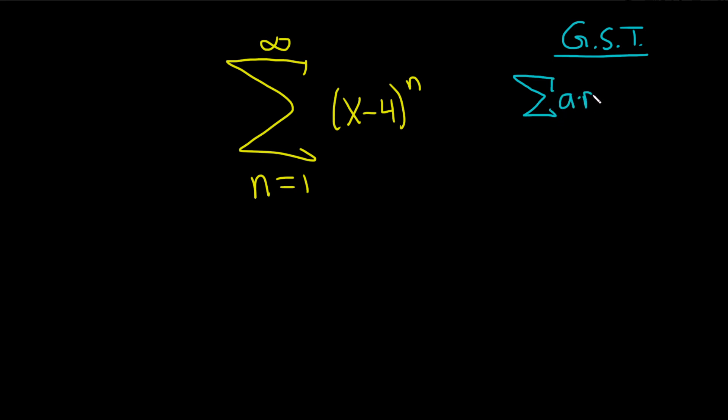say a times r to the n, sometimes books use n minus 1 as well. If the absolute value of r is less than 1, then you have a convergent series, so the series converges.